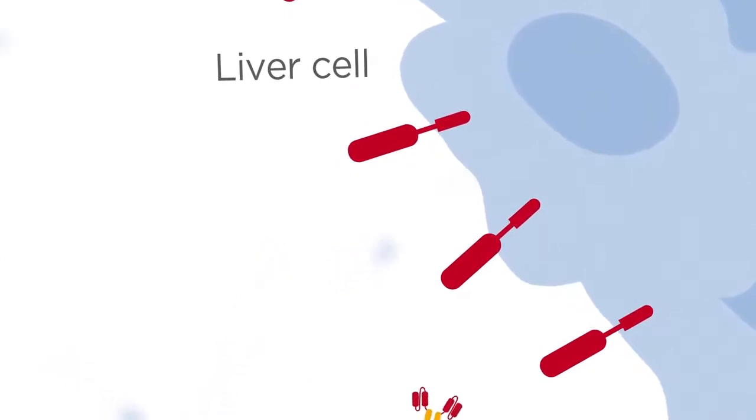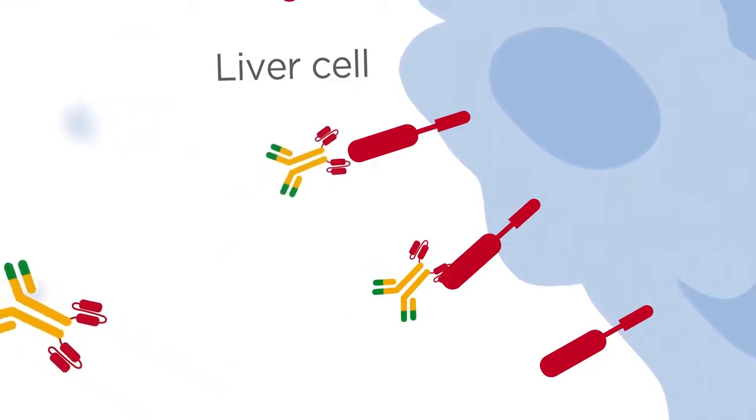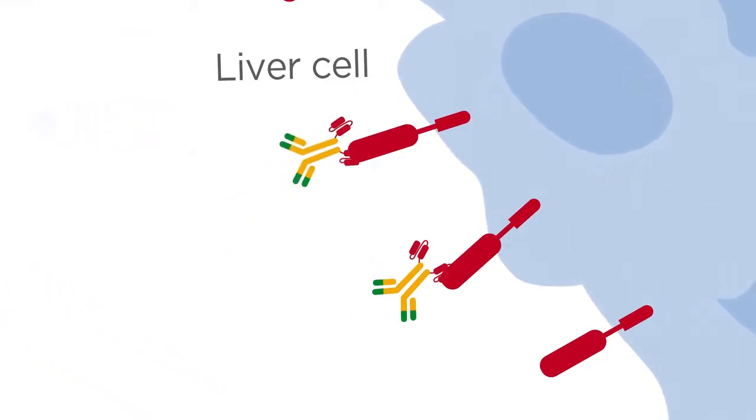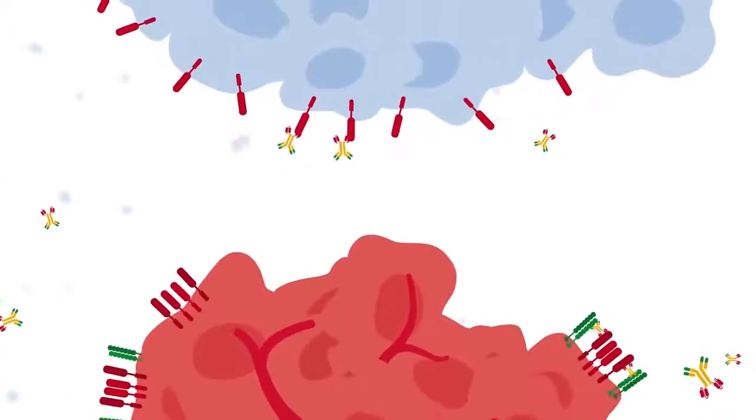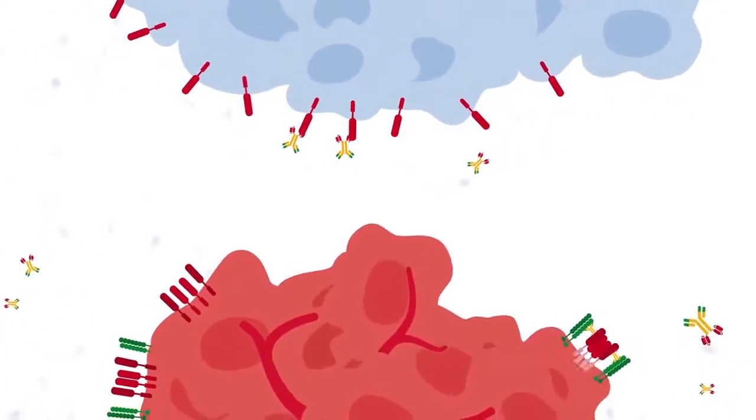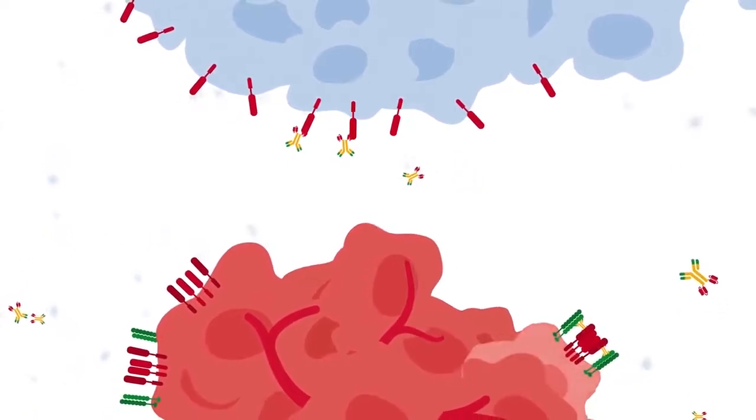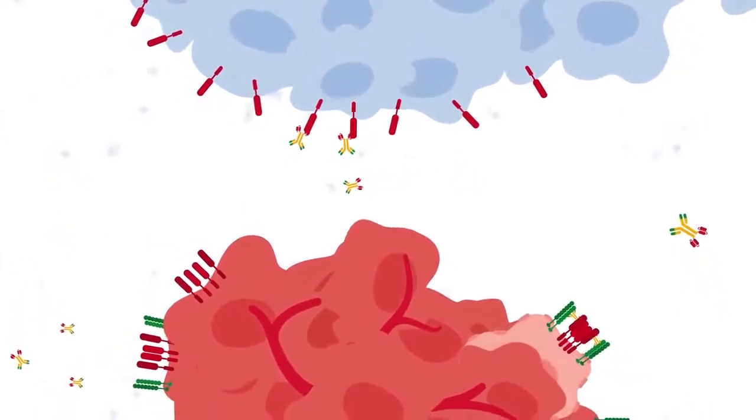Although the bispecific antibody also binds to Trail Receptor 2 on healthy liver cells, the binding is weak and is unable to form an active receptor complex and induce cell death. Few normal tissues express CDH17, but these have low sensitivity to Trail Receptor 2 activation.